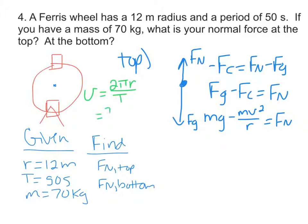So v equals 2π times 12 meters divided by 50 seconds. And this number equals 1.50 keeps on going meters per second. And you probably want to store that number in your calculator, maybe as v.